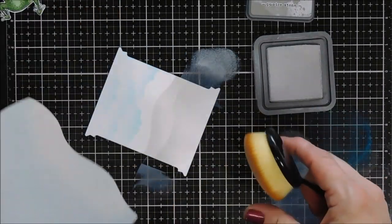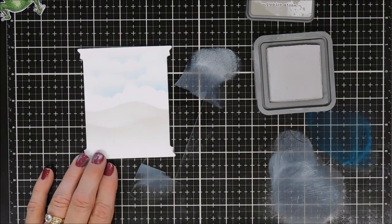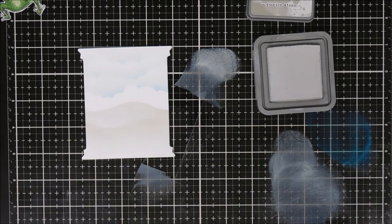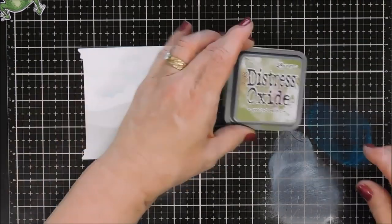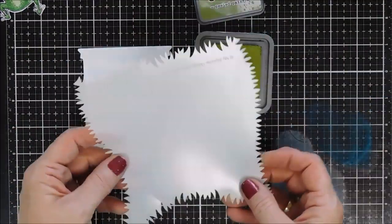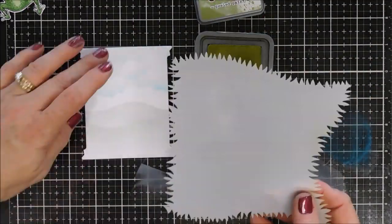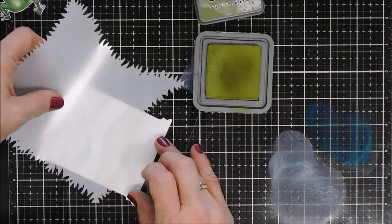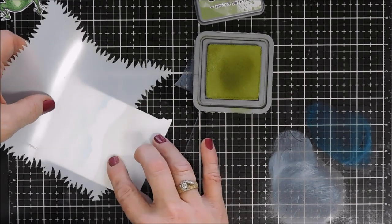And then for my very bottom we're going to bring in a grassy stencil and for that we're going to be using Peeled Paint and just kind of figuring out which one I want to use.